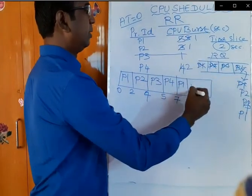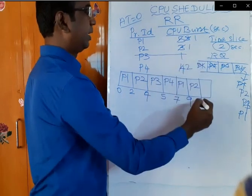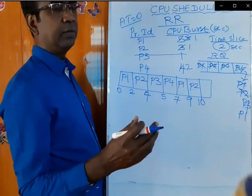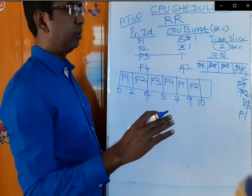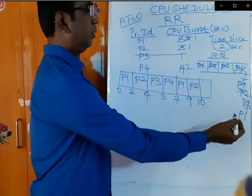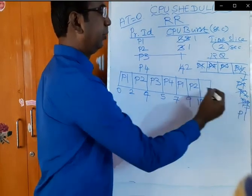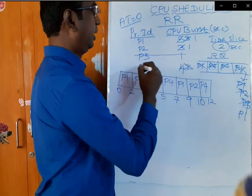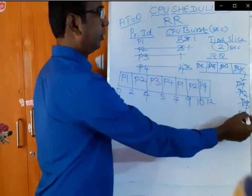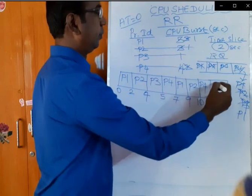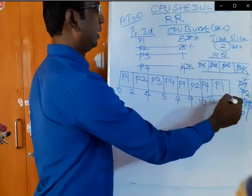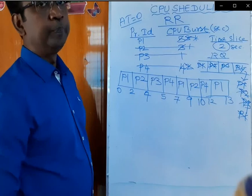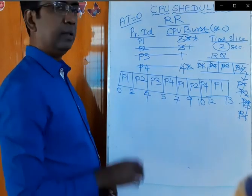Again P2 will be given the chance. P2 requires only 1 second, so it will execute for 1 second and come out of the CPU. P2 will not require the CPU anymore and will come out of the queue. Then P4 will enter into the CPU, execute for 2 seconds, reaching the 12th second. P4 has completed its work and will come out of the queue. Finally, P1 will enter — P1's remaining time is 1 second — so it will execute for 1 second and complete its job, coming out of the CPU. This is the Gantt chart for round-robin scheduling for this process.